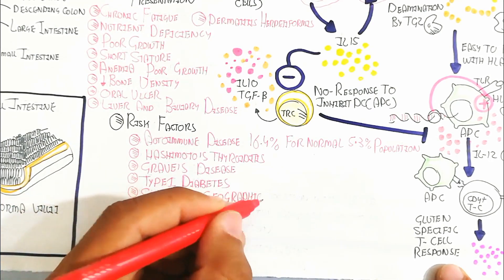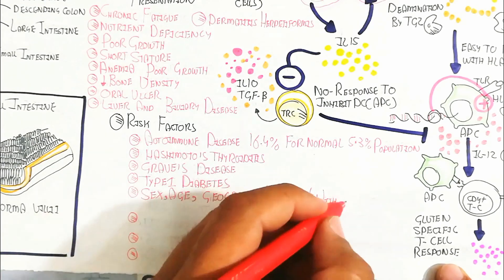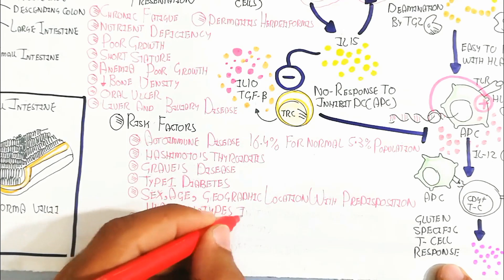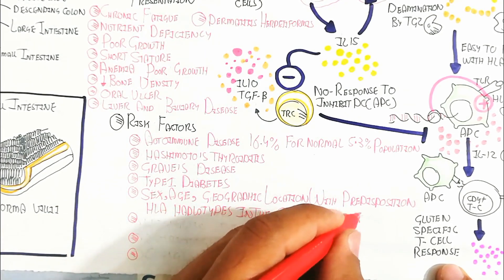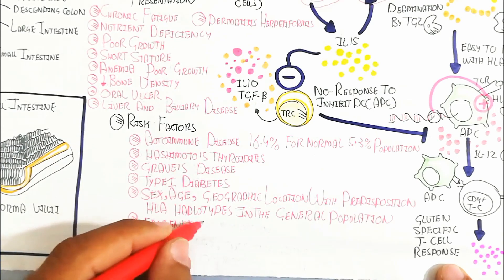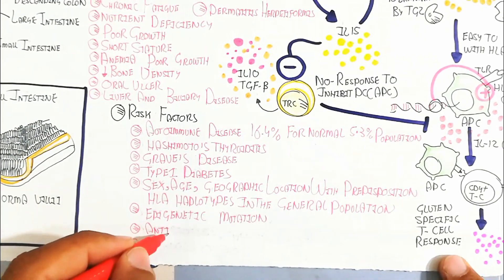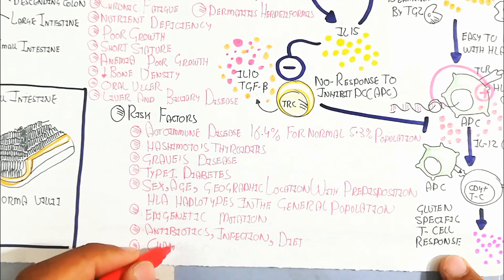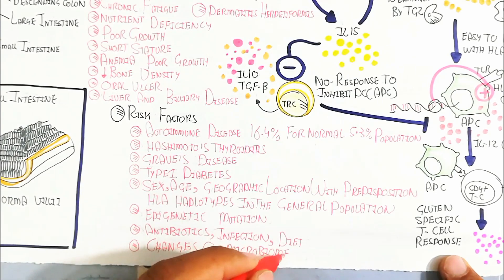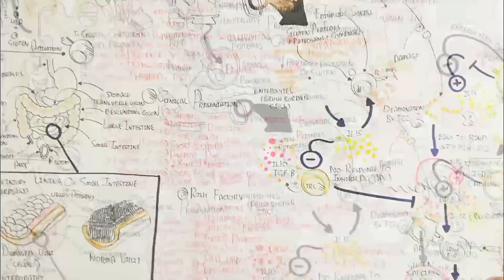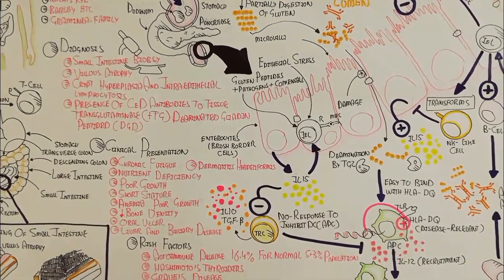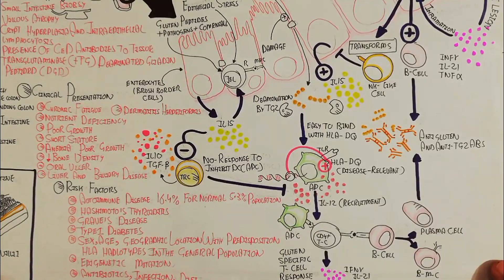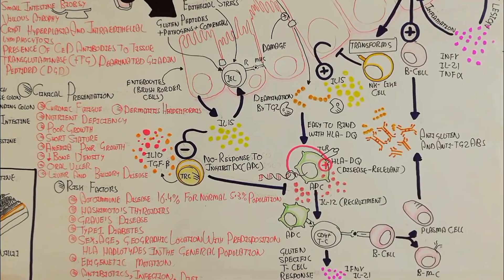Risk factors include autoimmune conditions such as Hashimoto's thyroiditis, Graves' disease, and type 1 diabetes, as well as sex, age, geographical location, HLA haplotype predisposition, epigenetic mutations, antibiotic use, and dietary changes affecting the gut microbiome. This concludes the video about celiac disease and its pathophysiology.